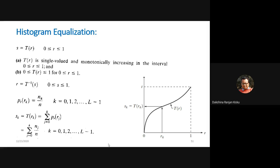Histogram equalization basically expands the pixel values. If we have narrow histogram components at any position on the x-axis — close to 0, close to 1, or in the middle — or if we have a very small range of histogram components, then to enhance the input image we have to increase the dynamic range of the gray level values. Histogram equalization is one such operation which increases that dynamic range.